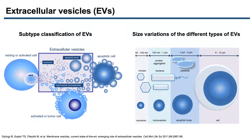MVs are heterogeneous membrane-bound vesicles and range from 100 nanometers to 1 micrometer in size. Exosomes are the smallest category in the EV family with sizes ranging from 30 to 150 nanometers. Finally, apoptotic bodies range from 1 to 5 micrometers in size.